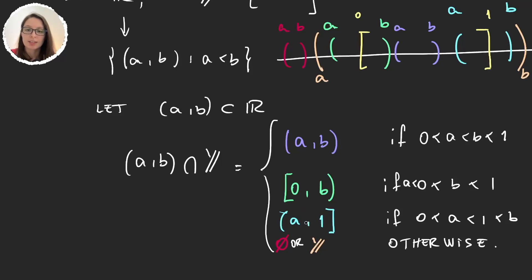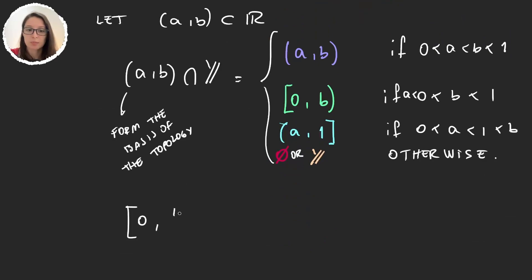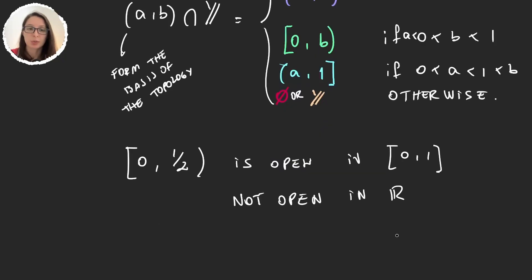So what this is telling us is that these intersections have these forms. And we know that the intersections are what form the topology. So for example, we could have the interval [0,1/2), and this interval is open in the [0,1]. But this interval was not open in the real line. Why is it open in the [0,1]? Well, very simple. [0,1/2) is the [0,1] intersection the, for example, (-1,1/2).